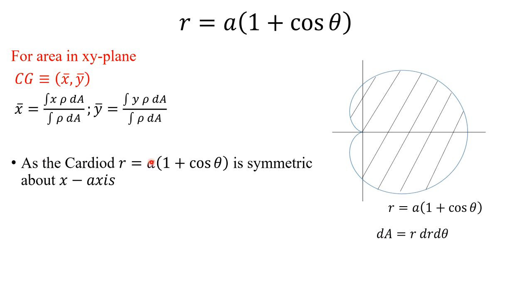And also because the cardioid is symmetric about x-axis, so if you replace theta by minus theta in this equation and the equation remains unchanged, we know that the curve is symmetric about x-axis. So in this case, this cardioid is symmetric about x-axis, so by observation we can say the center of gravity should lie on x-axis and therefore the y bar will be zero.